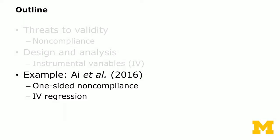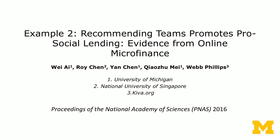Now we're going to look at a real experiment where the instrument was designed before we run the experiment, anticipating one-sided non-compliance. We use this experiment as an example to show the experiment design and the IV regression analysis.